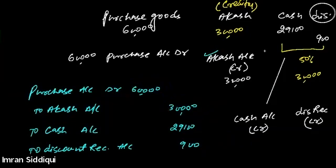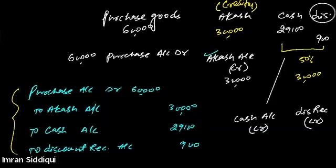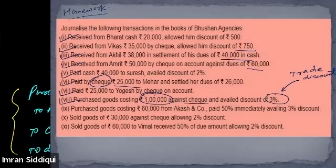The general entry is clear: purchase account debit 60,000; to Akash account credit 30,000; to cash account credit 29,100; to discount received account credit 900. Yes, it is clear.